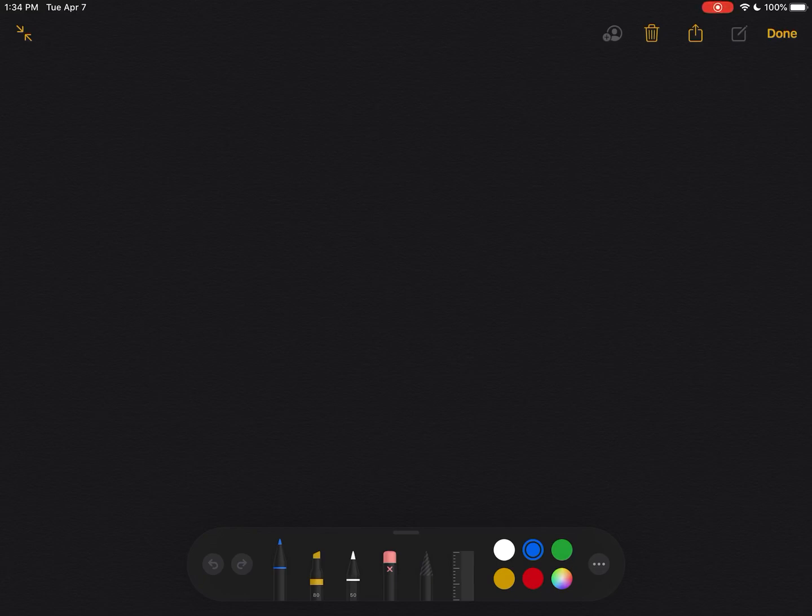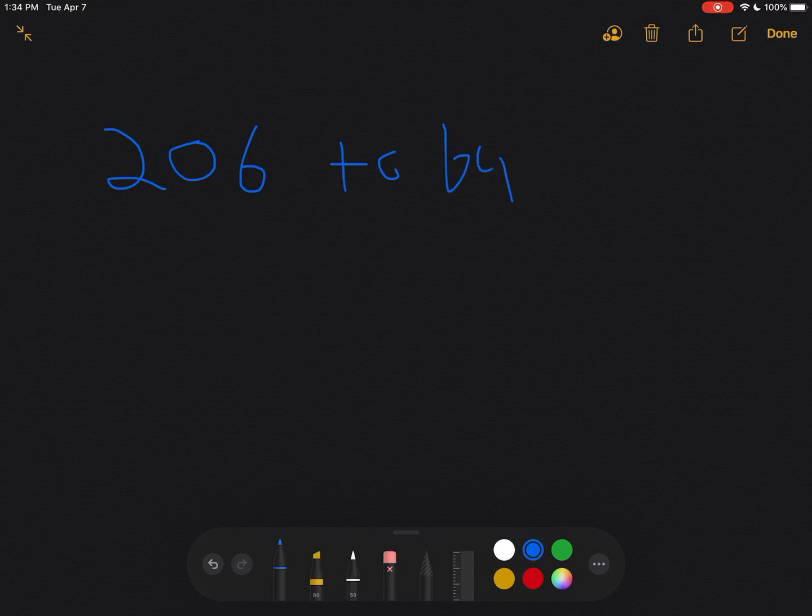Let's say we want to convert a number in base 10, like 206. So that's just two 100s and six ones. And let's put it in base, how about four.